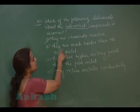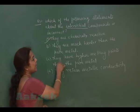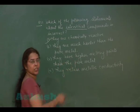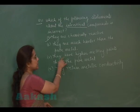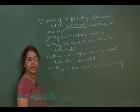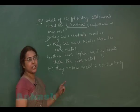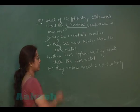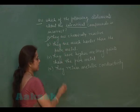Second statement is they are much harder than the pure metal. That is true. They have higher melting point than the pure metal. Impurities always increase the melting point. So this statement is also true. Fourth is they retain metallic conductivity. Interstitial compounds of transition metal retain their metallic conductivity. So these three options are correct but the first one is incorrect.